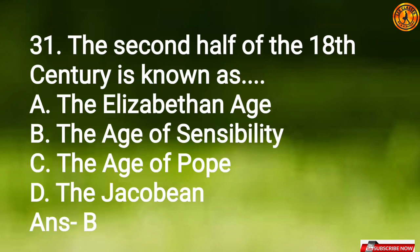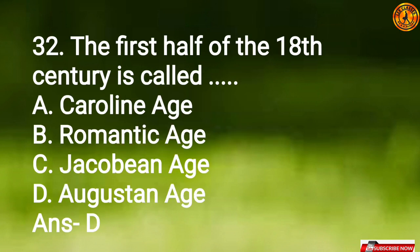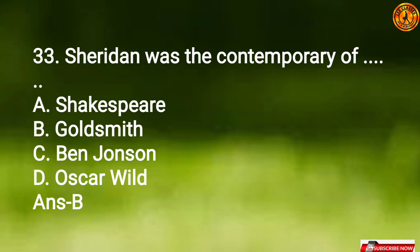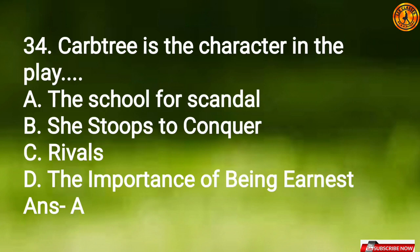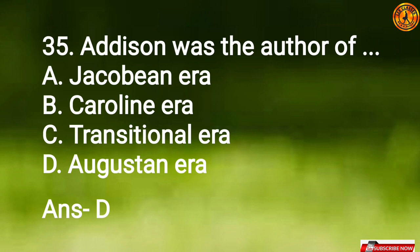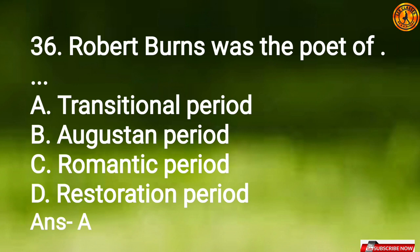Question 31: The second half of the 18th century is known as Option B, the Age of Sensibility. Question 32: The first half of the 18th century is called Option D, the Augustan Age. Question 33: Sheridan was the contemporary of Option B, Goldsmith. Question 34: 'Crabtree' is the character in the play 'The School for Scandal,' Option A. Question 35: Addison was the author of the Augustan Era. Question 36: Robert Burns was the poet of Option A, the transitional period.